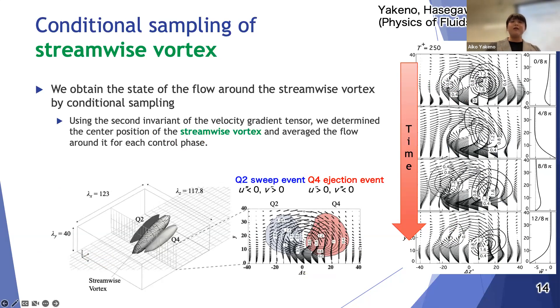First we obtain the state of the flow around the streamwise vortex by conditional sampling. We use the second invariant of the velocity gradient tensor and we determine the center position of each streamwise vortex and average the flow around it for each control phase. Here we get results like this, but you will see that the situation is very difficult to explain.